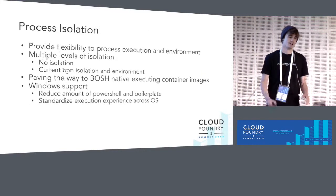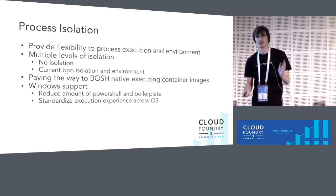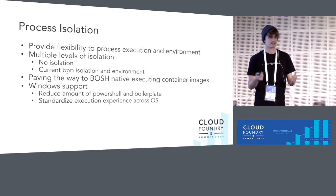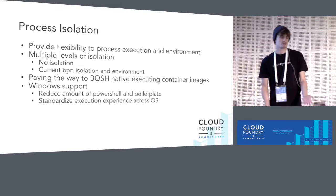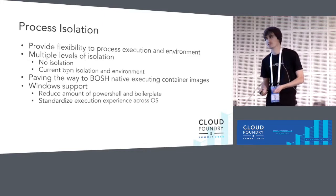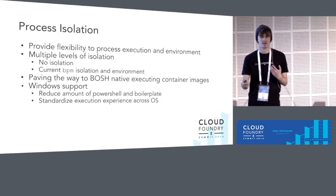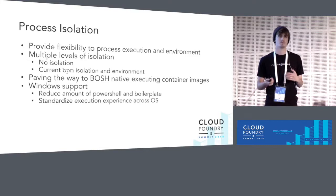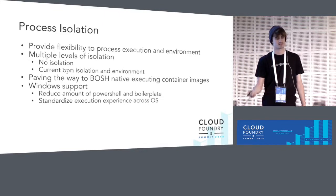The other part is process isolation — imagining more flexibility for what that means for jobs. With splitting out isolation, we can provide multiple levels of isolation: no isolation at all for jobs that still need to see the whole stemcell, or using the current BPM isolation model. One really cool thing about this isolation layer is we can imagine running container images on Bosch stemcells. We envision providing the container image as a Bosch package and running it on top of the stemcell — starting to bring Bosch and other platforms more consistently together. You can imagine transforming software from one platform to Bosch and vice versa in a much easier way.